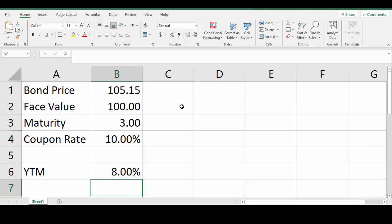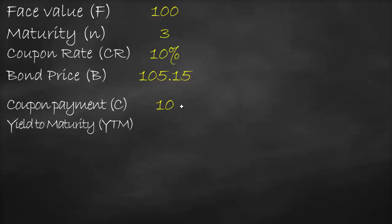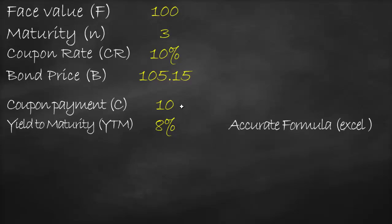In this example, with bond price 105.15, face value 100, maturity three years, and coupon rate 10%, our yield to maturity is 8%. This is the accurate answer from Excel.